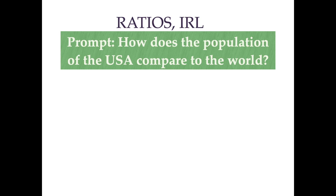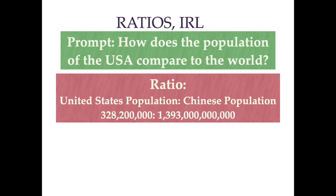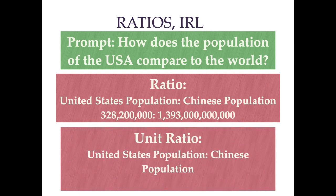If I'm looking at the population of the United States and I compare that unit ratio to another country, it's a lot easier to take these big giant numbers into something more understandable. The ratio of the United States population to the Chinese population is 328,200,000 to 1,393,000,000 — numbers that large are hard to wrap your brain around. So this is where ratios are very useful. The unit ratio of the United States population to the Chinese population is 1 to 4. That means for every one person living in America, there are four people living in China.